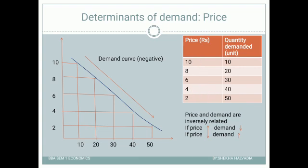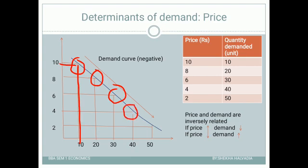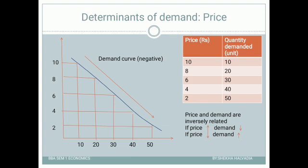Now let us plot this schedule in the diagram. At price 10, quantity demanded is 10 — that is one intersecting point. At price 8, quantity demanded is 20; price 6 and demand 30; price 4 and demand 40; price 2 and demand 50. By joining all these points we can prepare the demand curve.